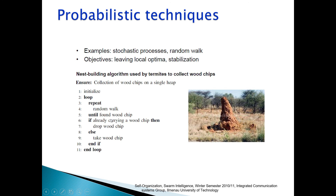It is a very simple algorithm using probabilistic techniques to achieve self-organization. This is self-organization by the termites — no external agent, external management, coordination, or central point of contact is required. They do a random walk until they find a wood chip.